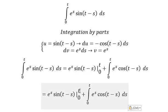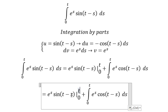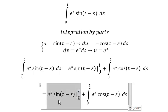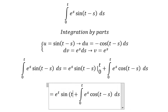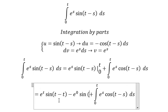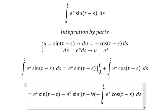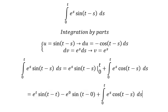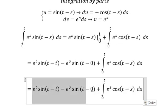So we put t in for h, and h equals zero in for h. This one gives zero, this one we have one, and this one we have sine t. So this term gives us negative sine t.